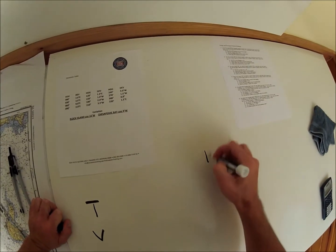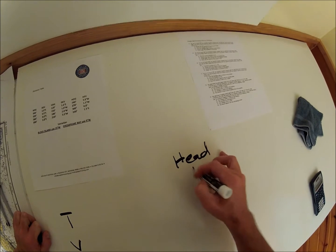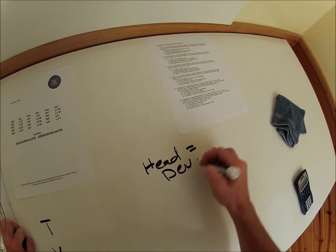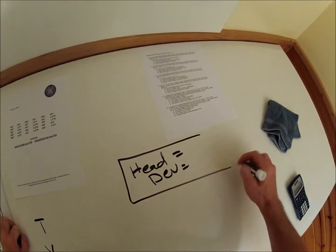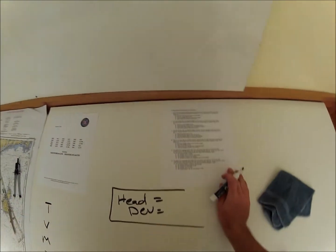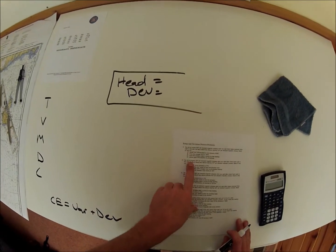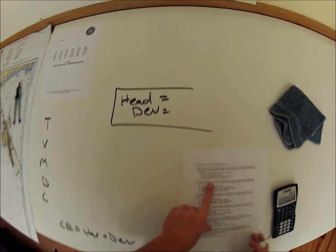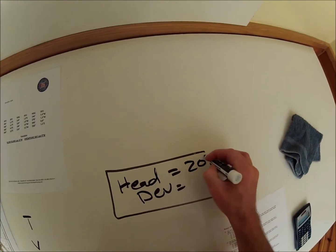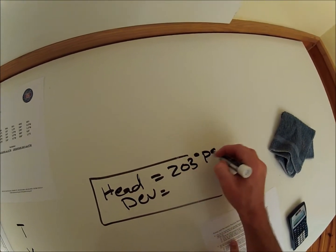And our heading, which yields a deviation which we are checking. So let's get what we can from the problem right now. Our course is 203, 203 degrees PSC, which gives what deviation? 210, 195 is 2.75.